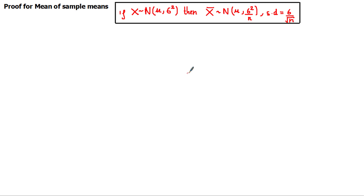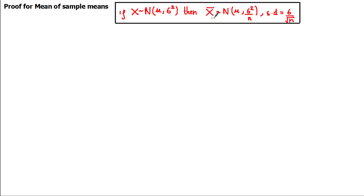Hi and welcome to this tutorial where we're going to be proving this result. We'll start by proving for the mean of sample means: if a random variable x is normally distributed with a mean of mu, then the sampling distribution of the sample means will also be normally distributed and have the same mean mu.